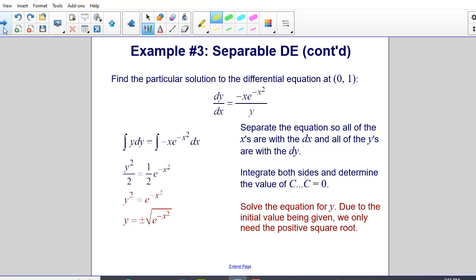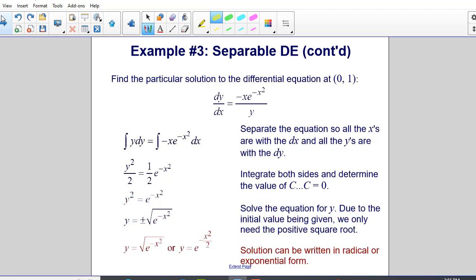Now I solve the equation for y due to the initial values given. I only need to take the positive root, square root, so I have y is equal to plus or minus the square root of e to the negative x squared power. But I'm only considering the positive root, so I can write it in radical form or exponential form. Both are acceptable.